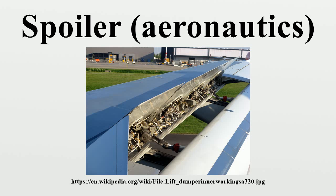Spoilers fall into two categories: those that are deployed at controlled angles during flight to increase descent rate or control roll, and those that are fully deployed immediately on landing to greatly reduce lift and increase drag. Spoilers are used by nearly every glider to control their rate of descent and thus achieve a controlled landing. An increased rate of descent can also be achieved by lowering the nose of an aircraft, but this would result in increased speed. Spoilers enable the approach to be made at a safe speed for landing.